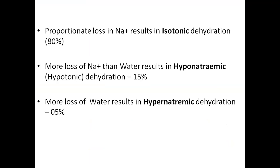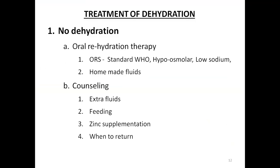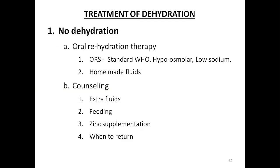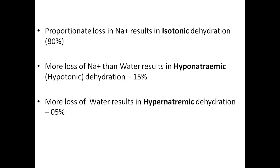Based on whether sodium or water is lost more: proportional loss of sodium and water is isotonic, more loss of sodium than water is hyponatremic, and the most common is isotonic. Hyponatremic dehydration is the most dangerous form because it affects brain cells, causes cell shrinkage, and must be treated very slowly to avoid cerebral edema and brain hemorrhage.